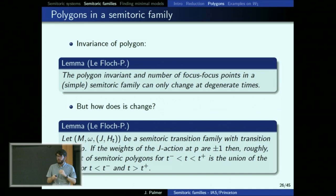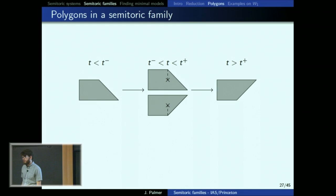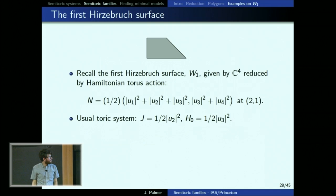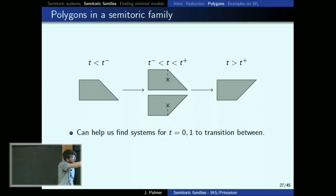I say roughly because the polygons have a bit more decoration. The general picture is: you start with a polygon, then for a while you have a semi-toric system with one focus-focus point so it has two polygons; then after the next degeneracy you have only one polygon again. These two polygons represent what you started with. It's exactly what we were thinking about when I drew the coupled angular momenta — the two limiting polygons tell us about the multiple polygons in between. So the strategy of using those polygons is a reasonable one.